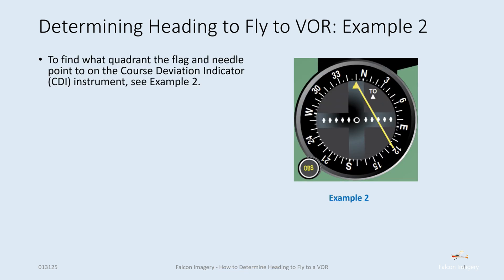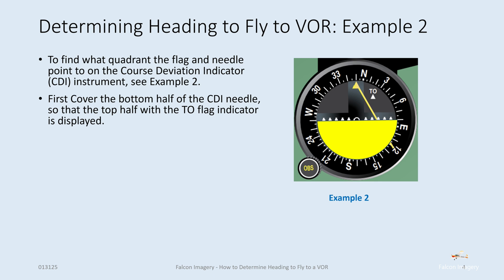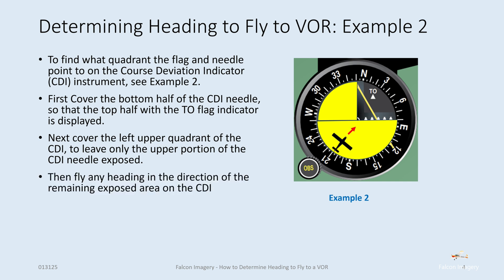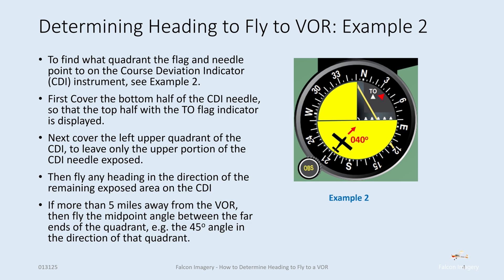Now we'll do one more — example 2. To find what quadrant the flag and needle point to on the course deviation indicator, we look at this example. In this case, we see a to indication as well, but we see the needle off to the right. Again, we're going to cover the bottom half of the CDI needle so that the top half with the to flag indicator is displayed. Then we're going to cover the left upper quadrant of the CDI to leave only the upper portion of the CDI needle exposed, off to the right. That tells us we need to fly to the northeast. We can position our plane to fly any direction in that northeast quadrant, and if we're more than five miles away, we will fly a heading of about 040 to hit the midpoint towards that VOR.